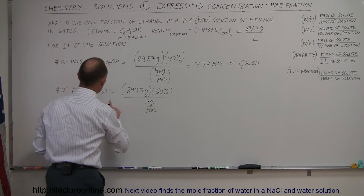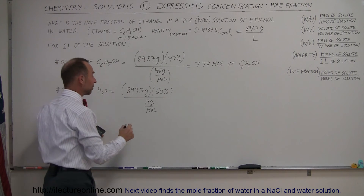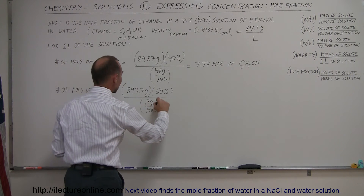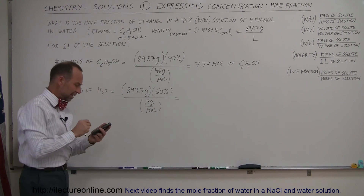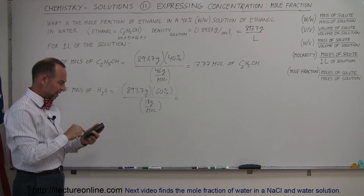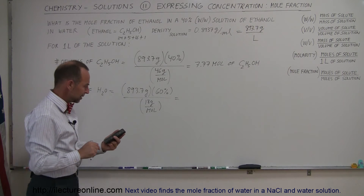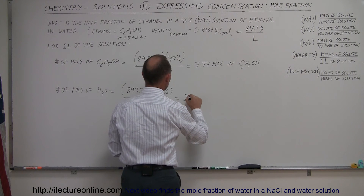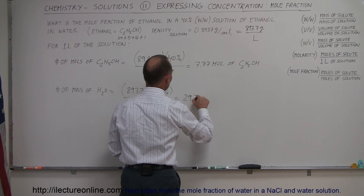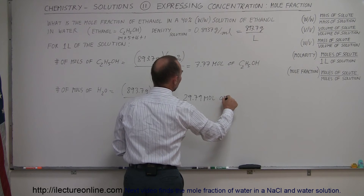Water has one oxygen — that's 16 grams — and two hydrogens, that's another 2 grams, giving 18 grams per mole. So: 893.7 times 0.6 divided by 18, and we get 29.79 moles of water.